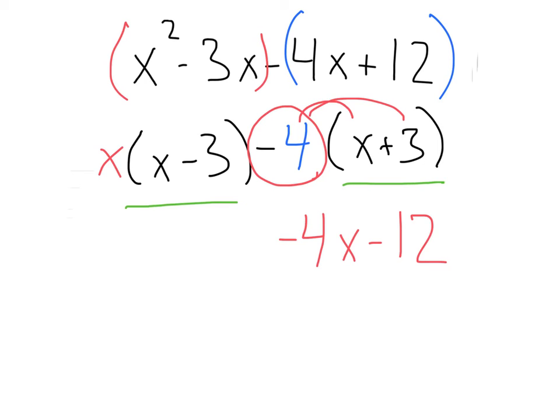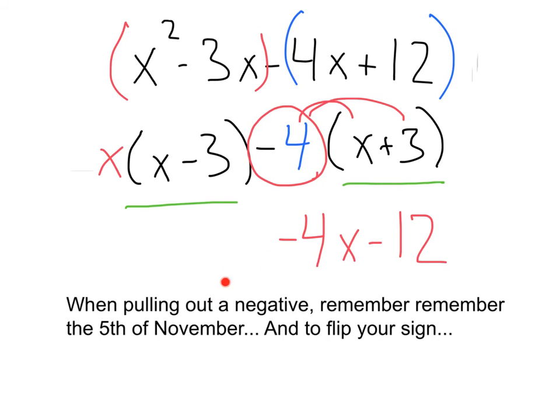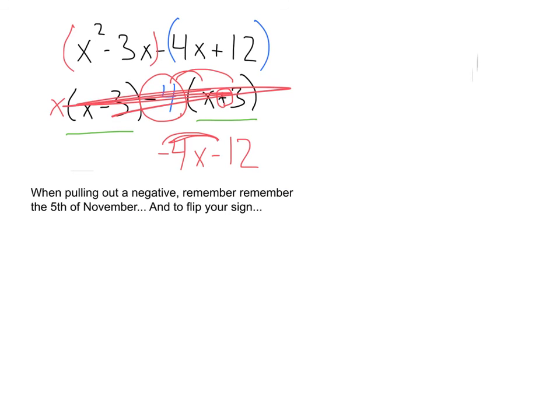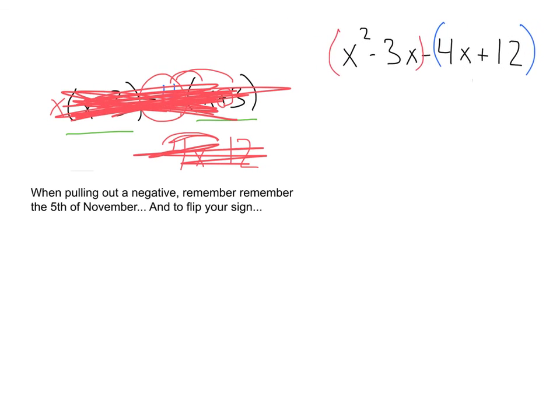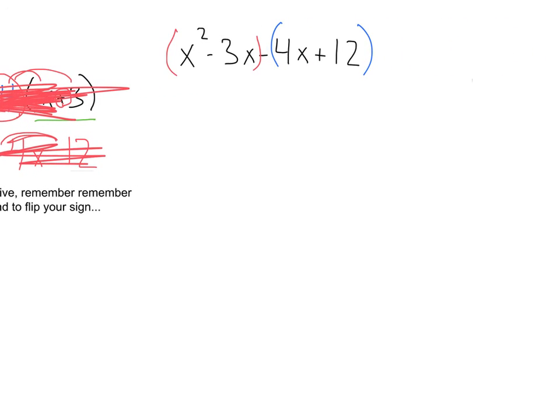So, super important. Whenever we pull out a negative from this group, we have to flip this sign to accommodate for the fact that that negative is going to distribute across. So, let's get rid of our error right here. And let's proceed the correct way.